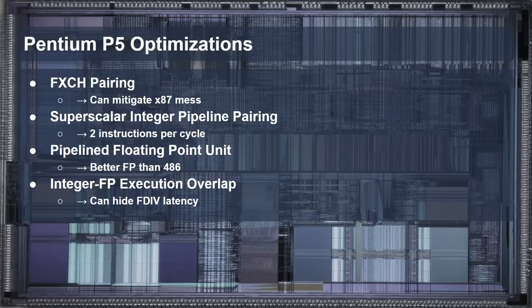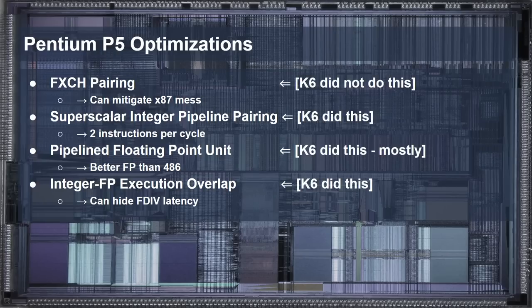It's easy to see why Quake performed well on the Pentium compared to the 486, but surely the other processors released afterwards could do some of these things too. Looking at the optimizations utilized on the Pentium, we can see that many of them are also present on the AMD K6. The K6 is capable of two-way superscalar execution, has a pipelined floating-point unit — mostly — and the K6 can overlap integer and floating-point instructions. The only optimization which the K6 did not implement was the floating-point exchange instruction pairing. Could that alone cause a significant performance difference between the Pentium and the K6? To understand this further, we need to look at the x87 extensions in more detail.